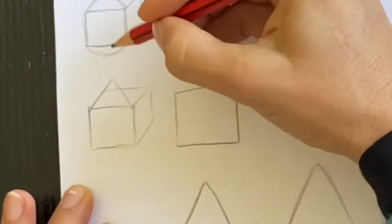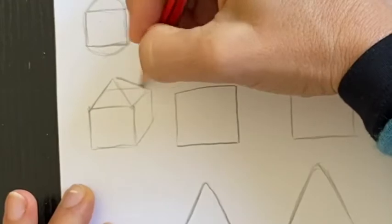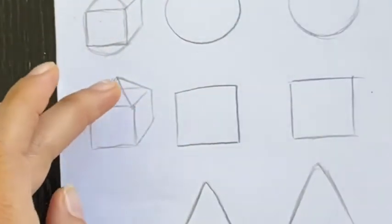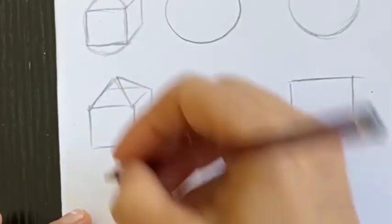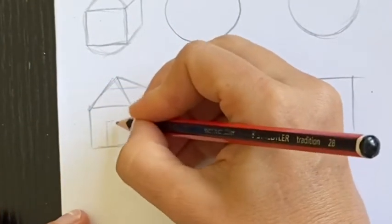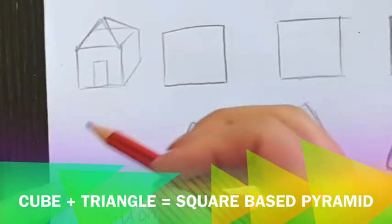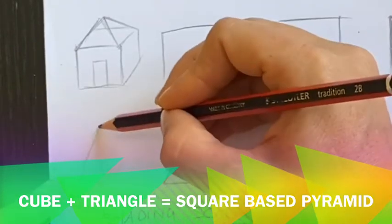And now I've got a triangle on top of a cube, or a pyramid on top of a cube, which could become a house. Now actually, let's have a look at a pyramid. So at the bottom if I draw my triangle again, this is a square-based pyramid.